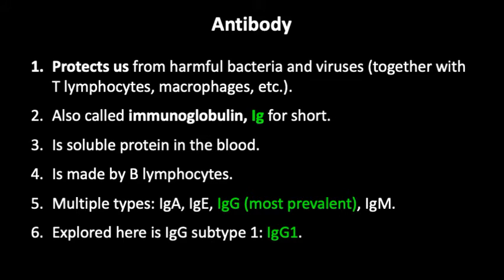It's a soluble protein that moves around in our bloodstream and is made by B lymphocytes. There are several different types of antibody: IgA, IgE which is involved in allergy, IgG is the most prevalent form of antibody, and IgM. What we're going to explore here is IgG subtype 1 called IgG1.